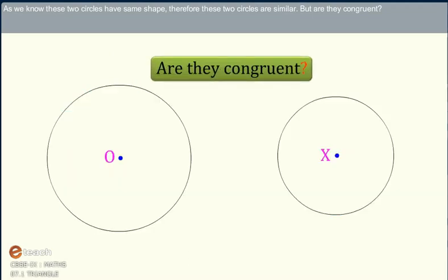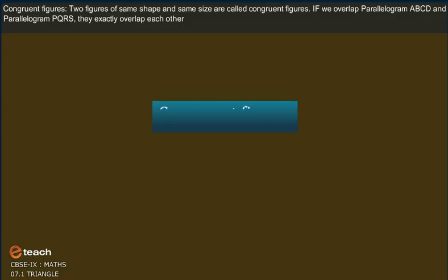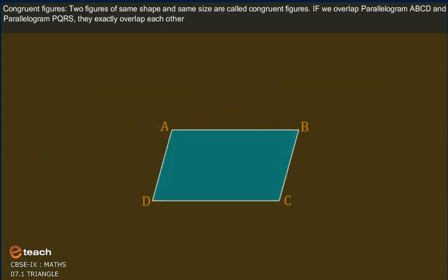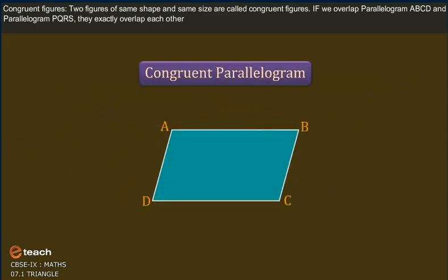But are they congruent? Two figures of the same shape and same size are called congruent figures. If we overlap parallelogram ABCD and parallelogram PQRS, they exactly overlap each other.